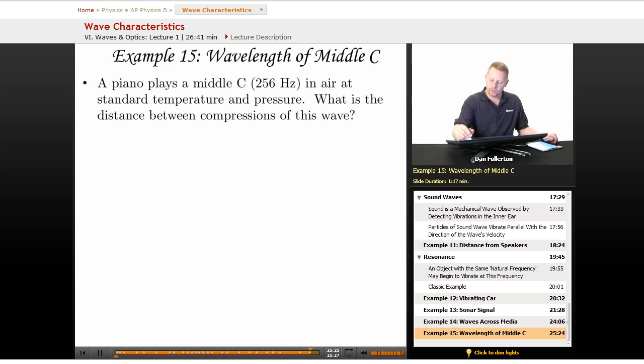All right, let's check out one last sample problem. A piano plays a middle C, which has a frequency corresponding to pitch of 256 hertz in air at standard temperature and pressure. So we know frequency is 256 hertz. And if it's at standard temperature and pressure, air, sound velocity must be about 343 meters per second.